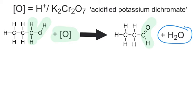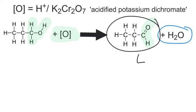What I could have done instead is reacted this alcohol with excess oxidising agent under a reflux — this reaction was very clearly under a distillation. In a distillation, the aldehyde as it's produced has a very low boiling point. The reason is that it only has permanent dipole-dipole and London intermolecular forces, whereas the alcohol has hydrogen bonding due to its OH group. So the aldehyde, as it forms, evaporates, gets condensed, cooled, and collected immediately in the distillation — and that prevents it from reacting further.